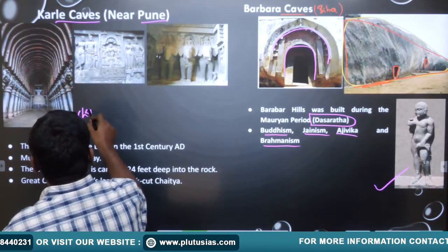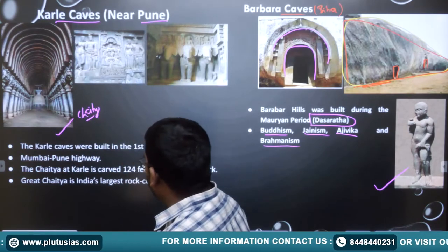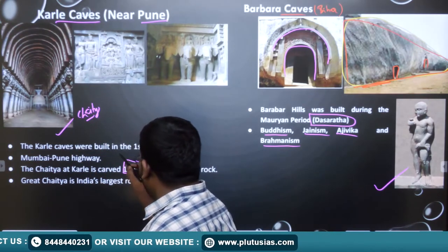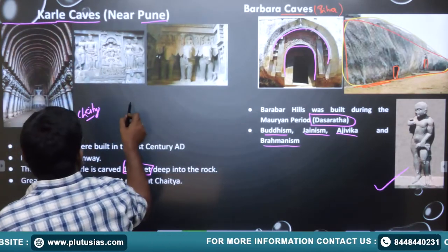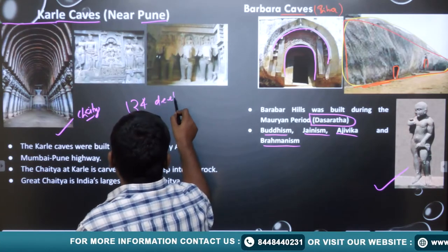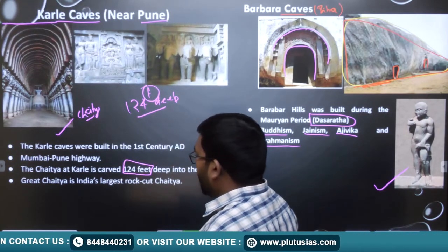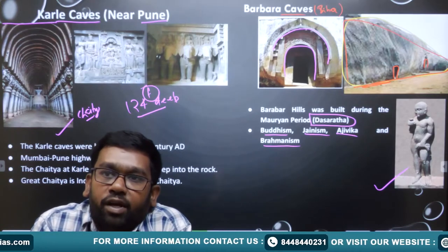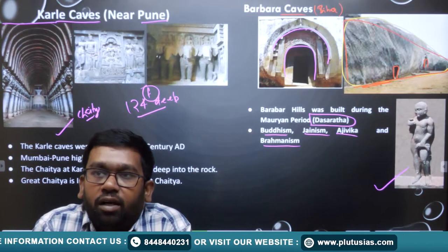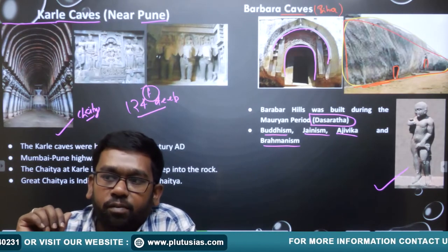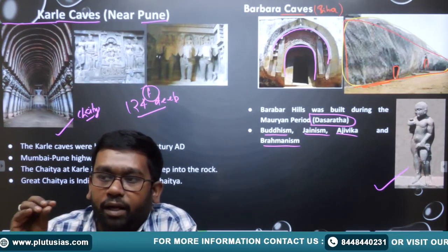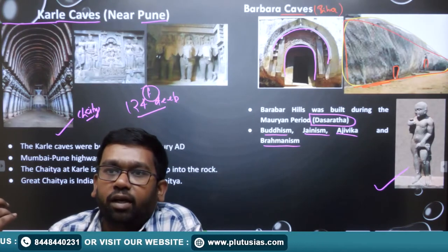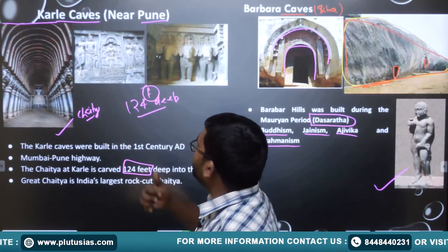Another cave made near Pune is Karla caves. This is a chaitya — a place where people used to worship. Karla caves were built in the first century AD. The chaitya at Karla is 124 feet deep into one rock, making it the largest rock-cut chaitya in India. In Buddhism, a chaitya is where relics of the Buddha are kept, and these later converted into stupas.